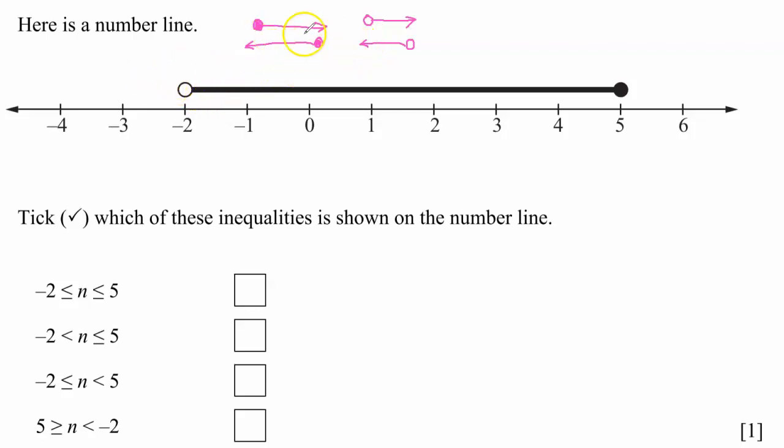So if we apply these principles, we would see that here, on negative two, we've got an unshaded circle. So this means that this inequality sign here is either a less or a greater than. So what it means is that the inequality symbol does not have an equal sign.